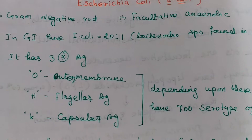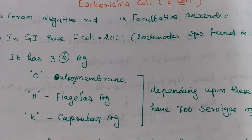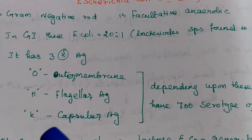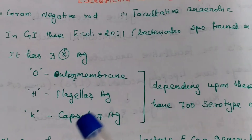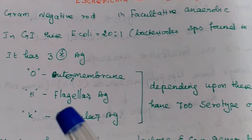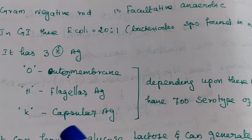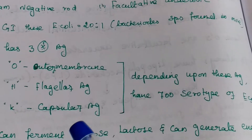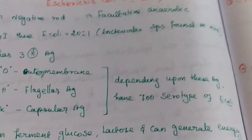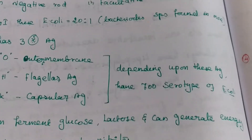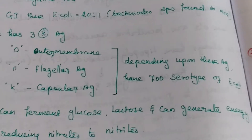E. coli has 3 antigens: O antigen, H antigen, and K antigen. O means outer membrane antigen, H is the flagellar antigen, and K is the capsular antigen. Depending upon these 3 antigens, we have 700 serotypes of E. coli.